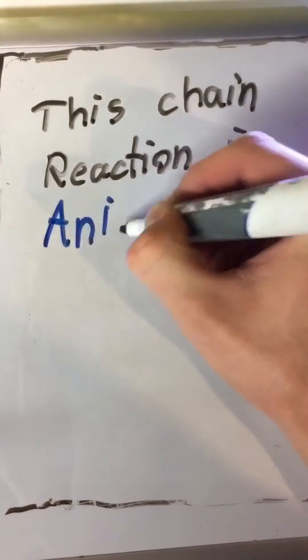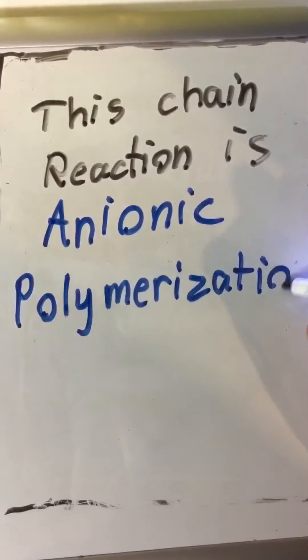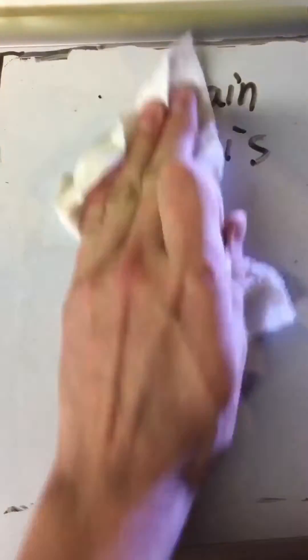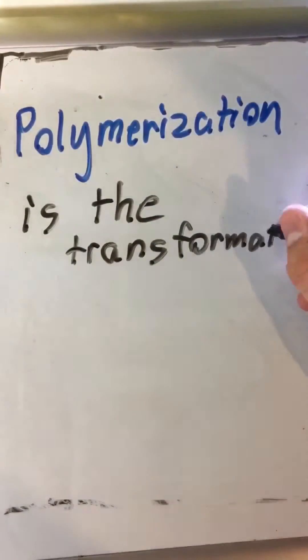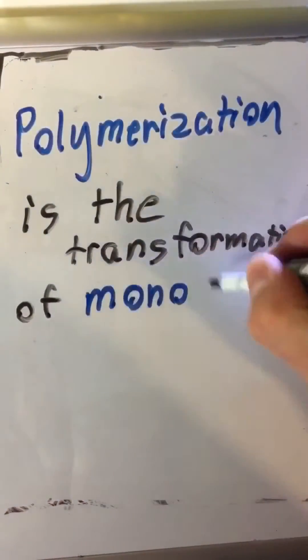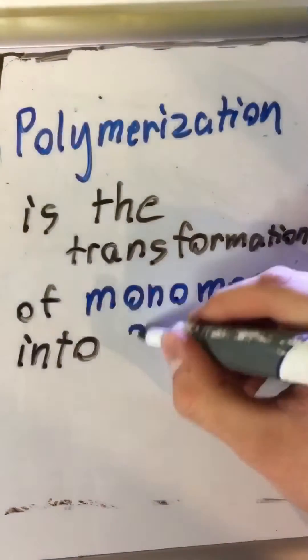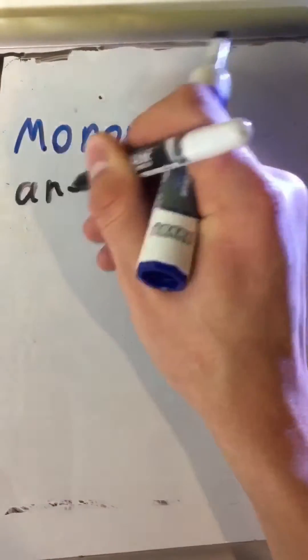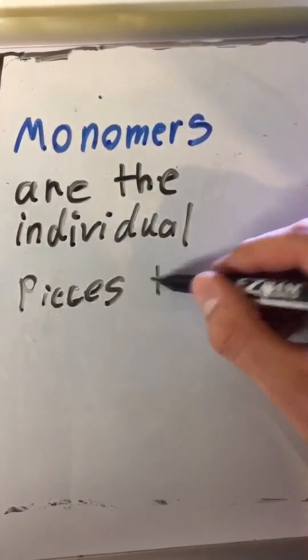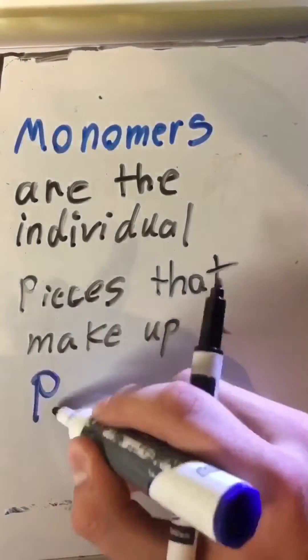This is called anionic polymerization. Polymerization is the transformation of monomers into polymers. Monomers are the individual pieces that make up the polymers.